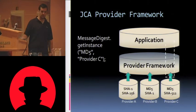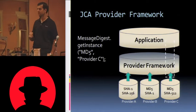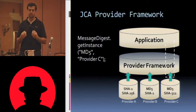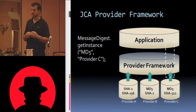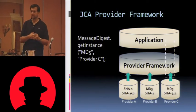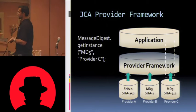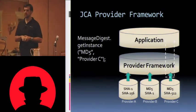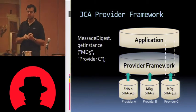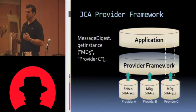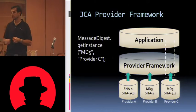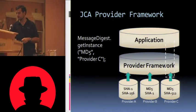There's also a second overload of getInstance where you can name the specific provider. The application can say MessageDigest.getInstance("MD5", "ProviderC") — in this case, the framework won't even ask anybody else; it'll just go to C and use it if available. I'm telling you this overload exists, but you should never actually use it. Even Sun says don't use this overload. The problem is that it makes it cryptographically un-agile — once you've hard-coded this particular provider in, that's it. It's going to use that provider and there's nothing you can do to change it.